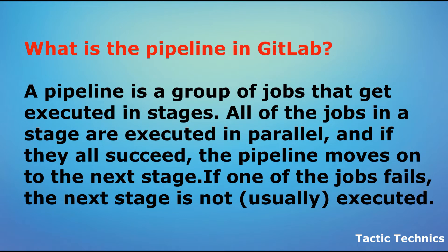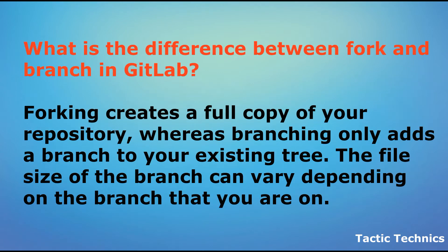What is the pipeline in GitLab? A pipeline is a group of jobs that get executed in stages. All of the jobs in a stage are executed in parallel, and if they all succeed, the pipeline moves on to the next stage. If one of the jobs fails, the next stage is not, usually, executed.